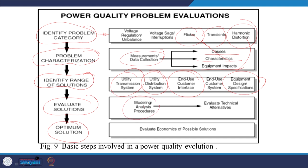After problem characterization, conduct modeling and analysis. Then evaluate technical alternatives — for example, a shunt active power filter can mitigate THD problems. Evaluate the economics of possible solutions: why not a passive filter instead of an active one? You can achieve the same result with a passive filter, and the choice is largely determined by market conditions.